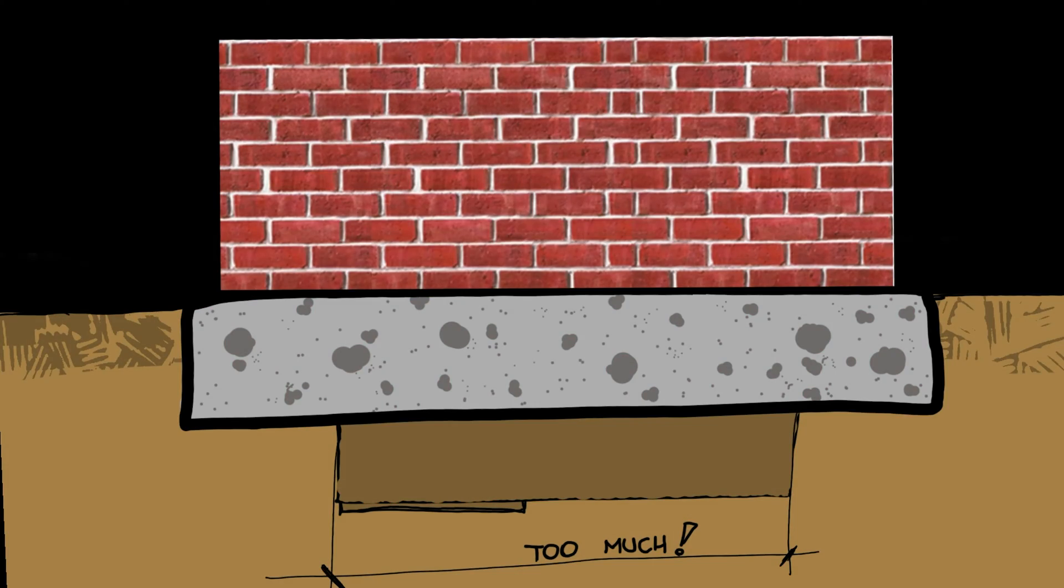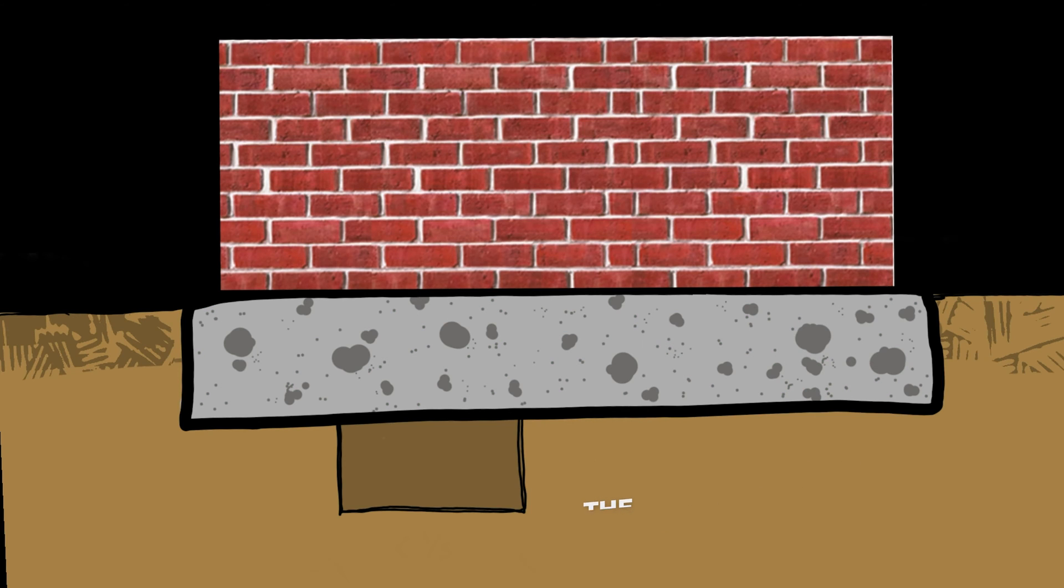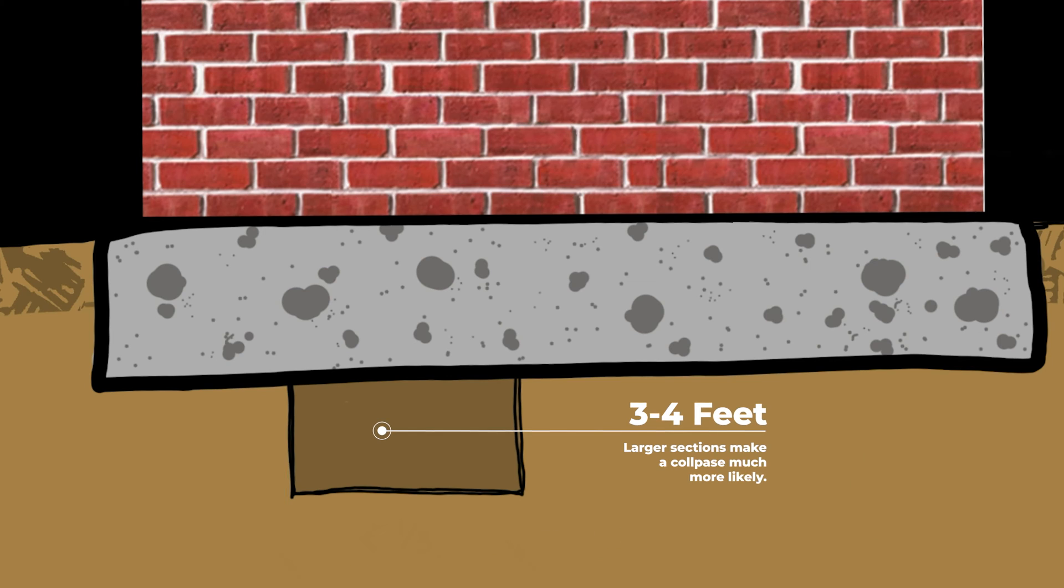Underpinning a section of any footing requires the work to be broken up into smaller sections. Always have a bigger section of the original footing holding up the building. Excavating up to 3 to 4 feet per section is a good rule of thumb as long as you don't break the other rules here.